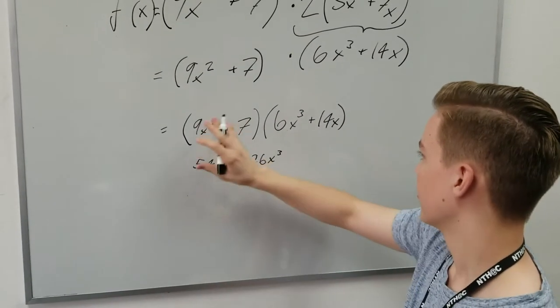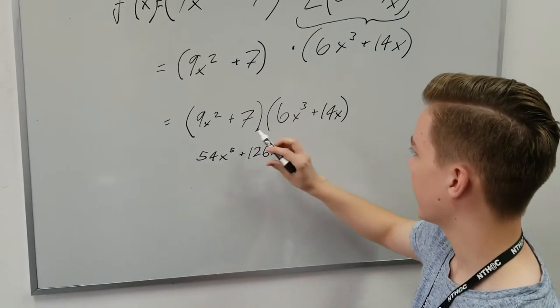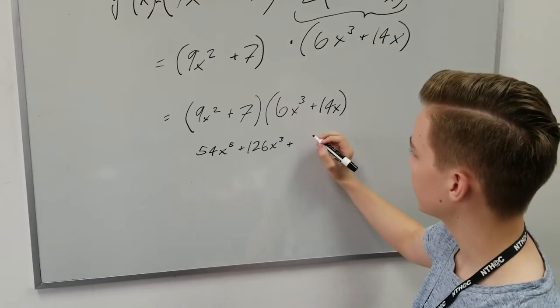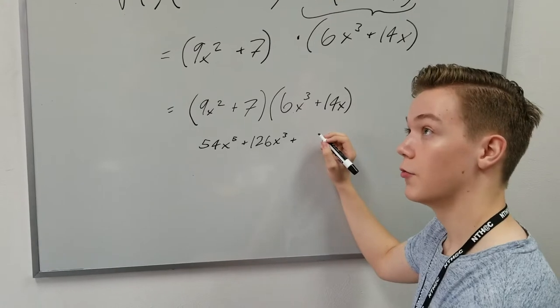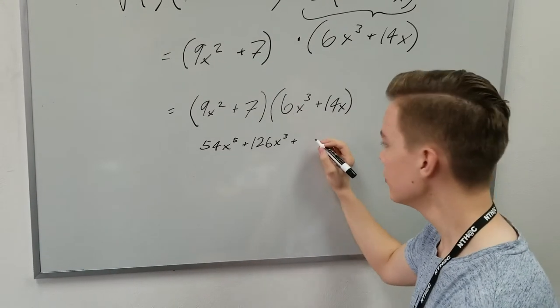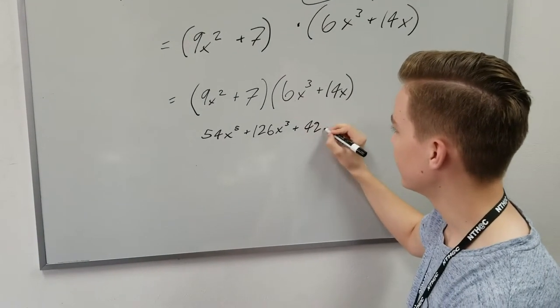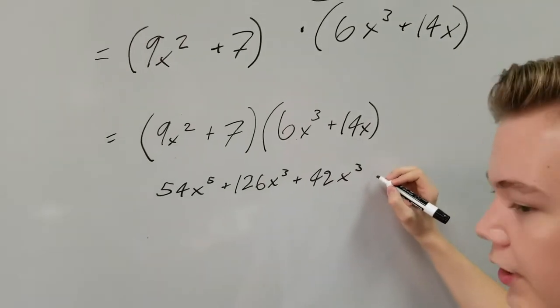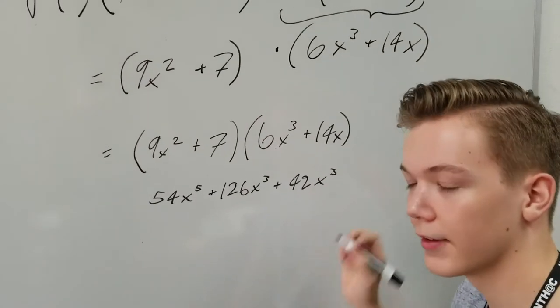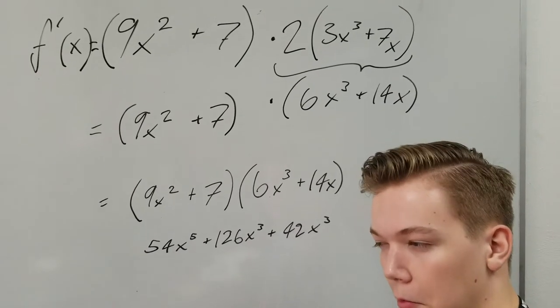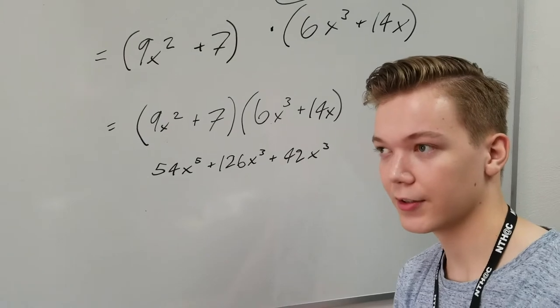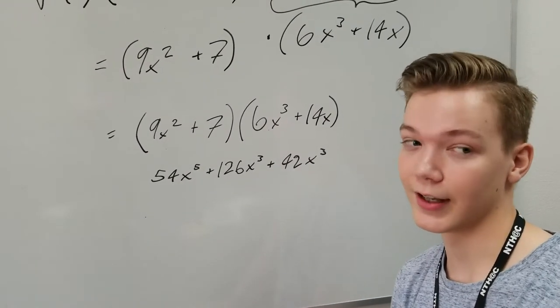So we're done with 9x squared. And then we do the same thing with 7. So, we have 7 times 6x cubed. That is 42x cubed. And then 7 times 14. 7 times 12. That is 84. 7 times 2 is 14. So, 84 plus 14. That is 98.